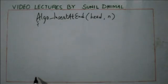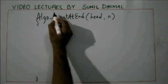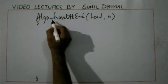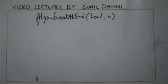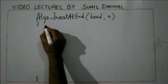As discussed in the last lecture, first we need to take care of the corner case. The corner case is the case wherein you have no elements in the list — that means the list is empty. When you know the list is empty, and the head pointer is pointing to nothing, that means head will be pointing to null.